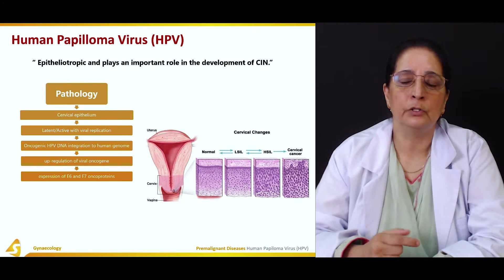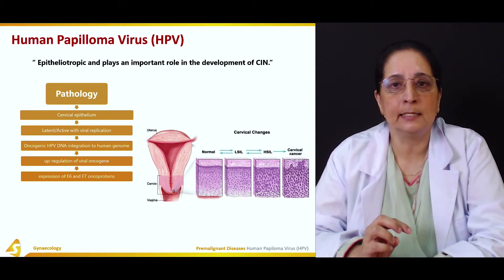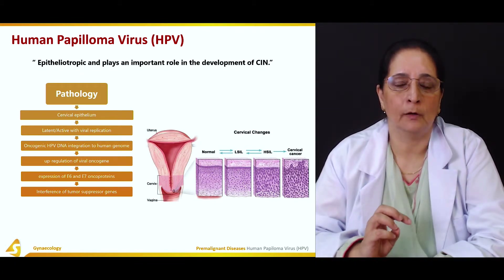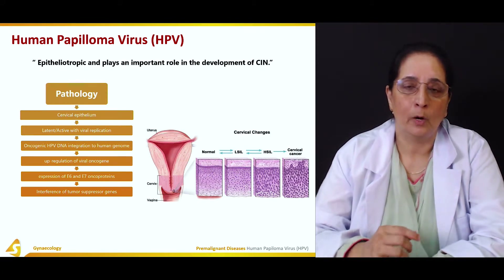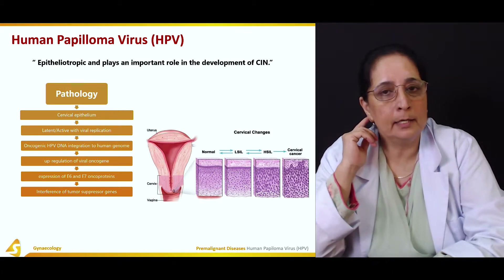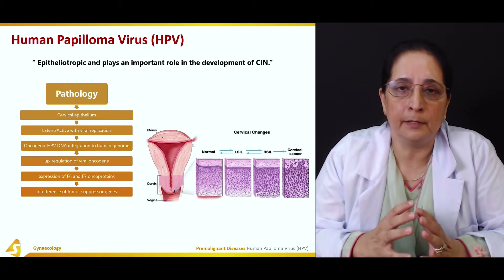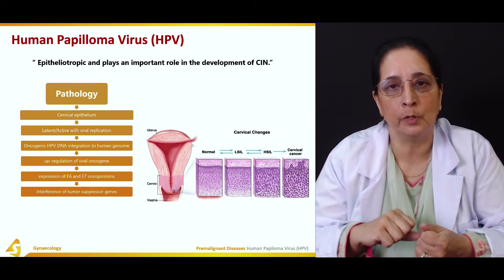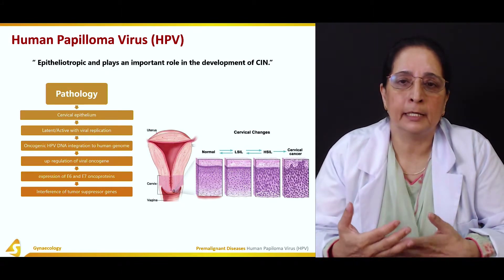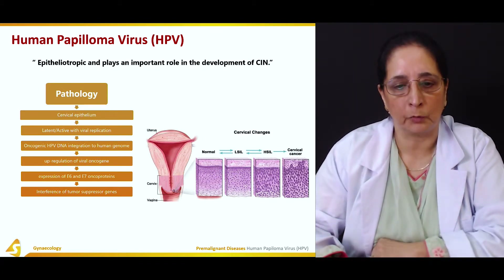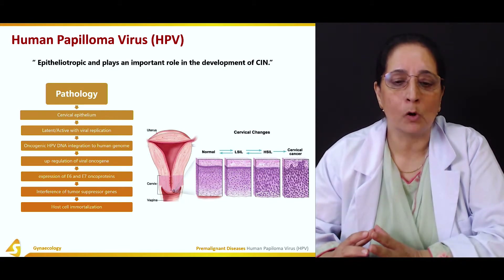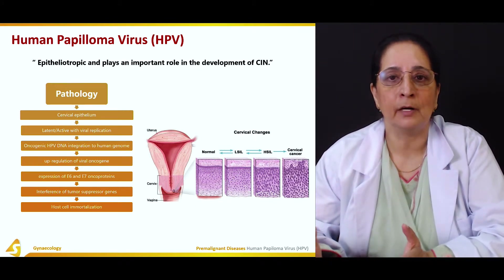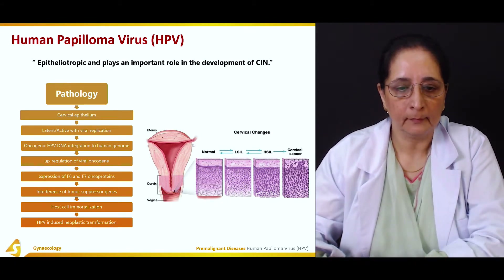There is upregulation of viral oncogenes. Once the viral DNA attacks the human DNA, there is upregulation of viral oncogenes, mainly expressed as E6 and E7 oncoproteins. These oncoproteins suppress or interfere with the tumor suppressor genes. With tumor suppressor function lost, changes leading to tumor formation and tumor growth occur, followed by host cell immortalization — meaning the cells no longer die and stay indefinitely.